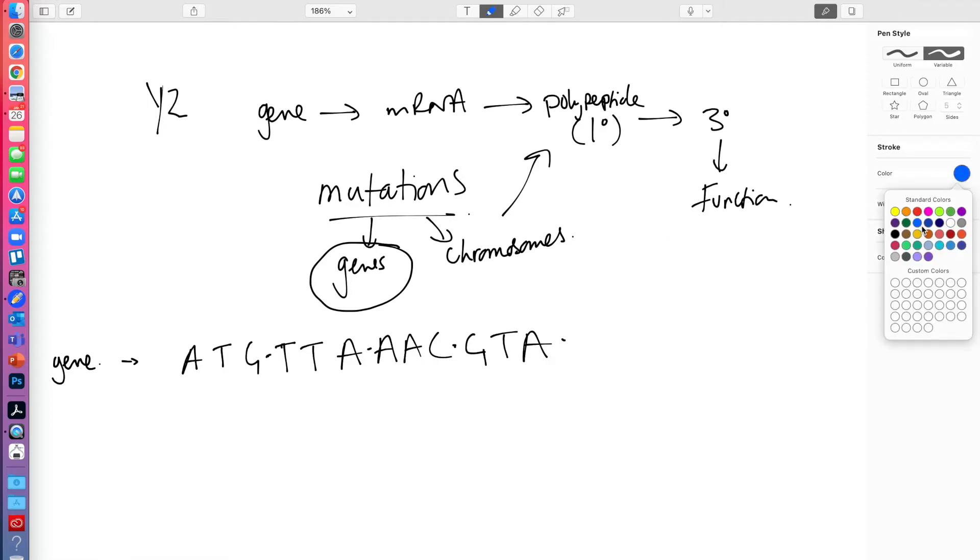Just change my colour, let's change it to blue. Now let's look at the mRNA. The mRNA will be a complementary sequence to that, remember. But RNA doesn't have any T bases, it has U instead. So A will give us, T will give us U. U, A, C, followed by A, A, U, followed by U, U, G, followed by C, A, U.